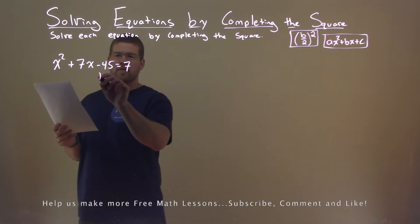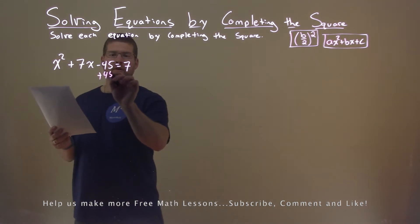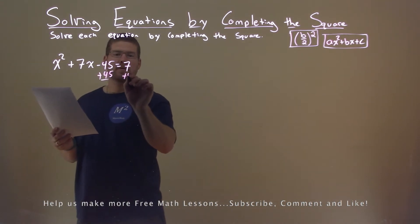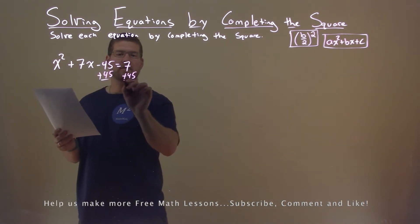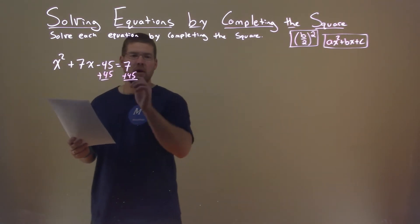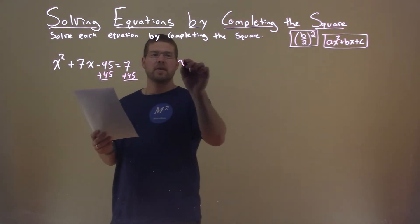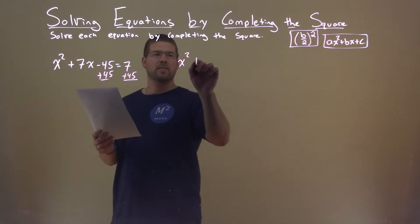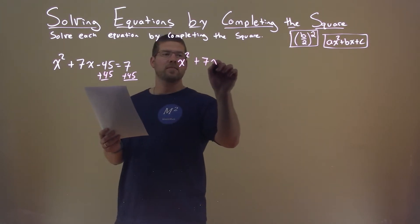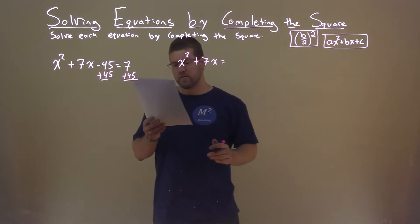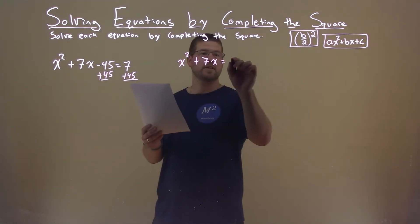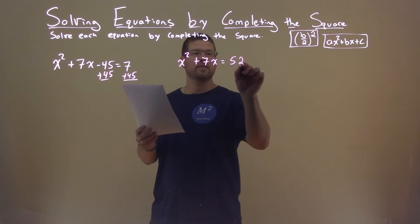First thing I want to do is add a 45 to both sides. That brings us here to x squared plus 7x equals 7 plus 45, which is 52.